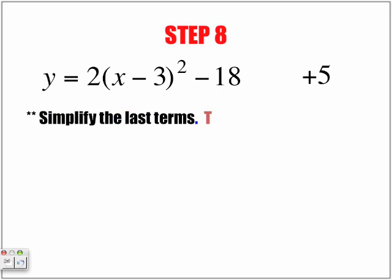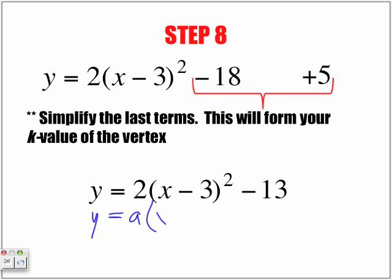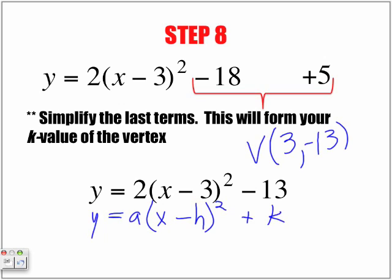Step eight: simplify the last terms. This will form your k value of the vertex. When we simplify, negative eighteen plus five gives us negative thirteen. So the equation is now y is equal to two times x minus three squared, minus thirteen. This is now in the form y equals a times x minus h squared plus k. So our vertex from completing the square is three and negative thirteen. Remember, whatever this value is, we take the reverse — that's our h value. And this is our k value. And there you have completing the square. Thank you.